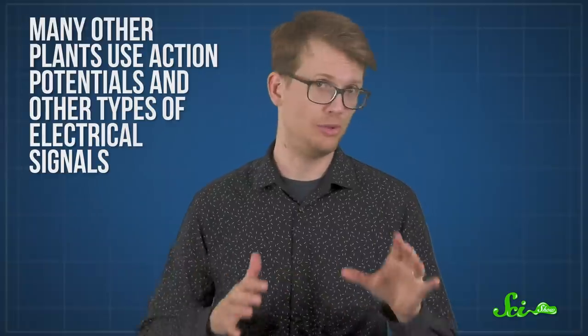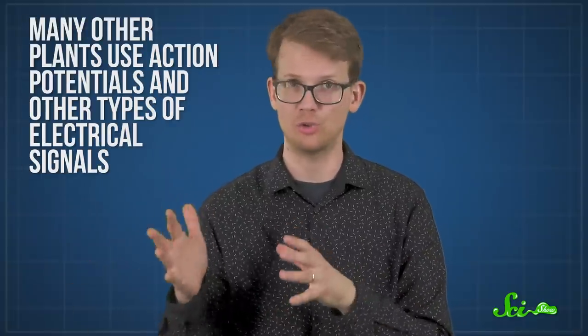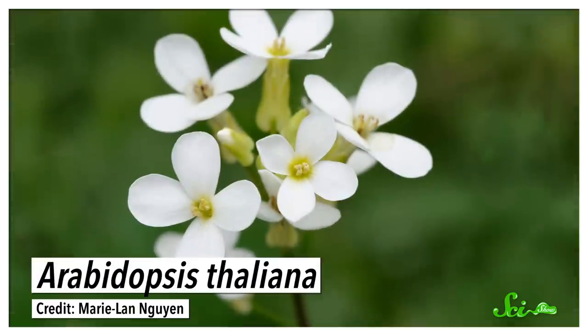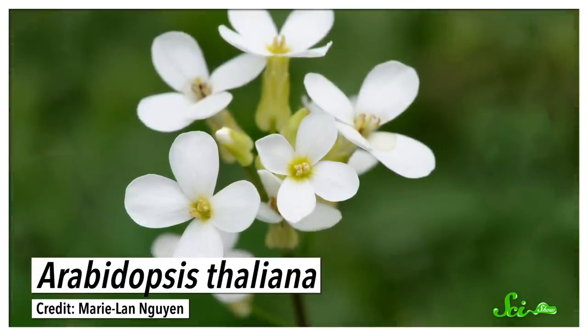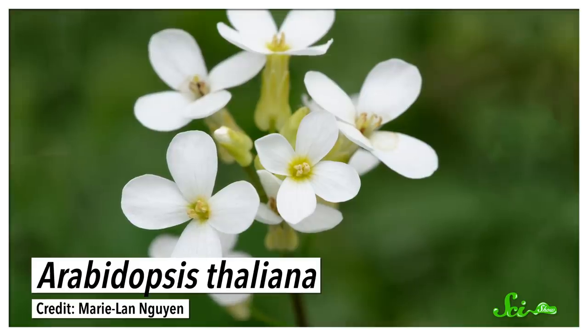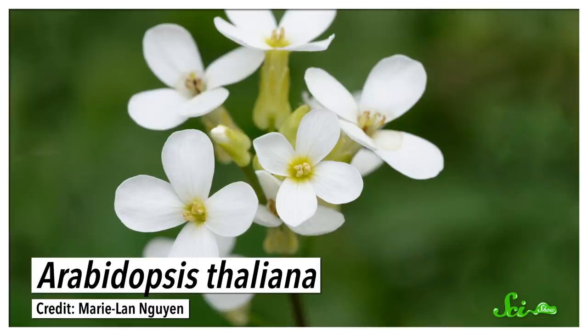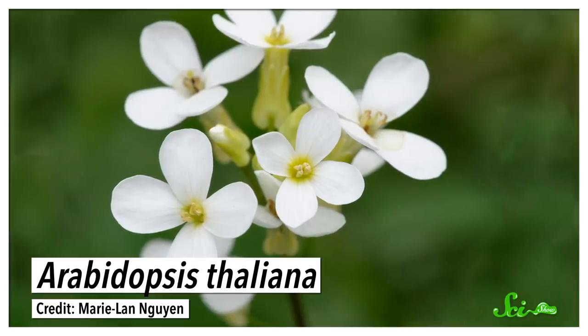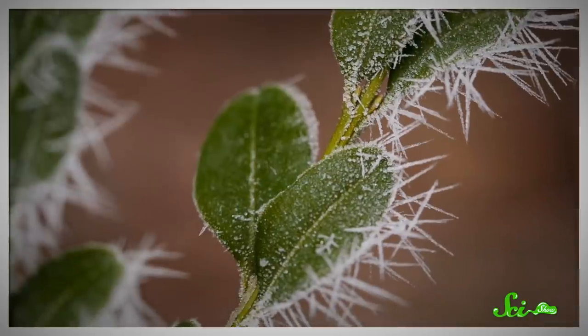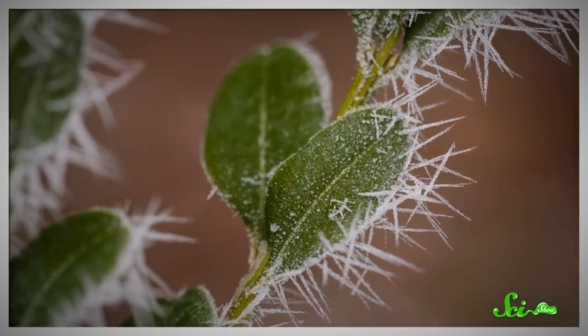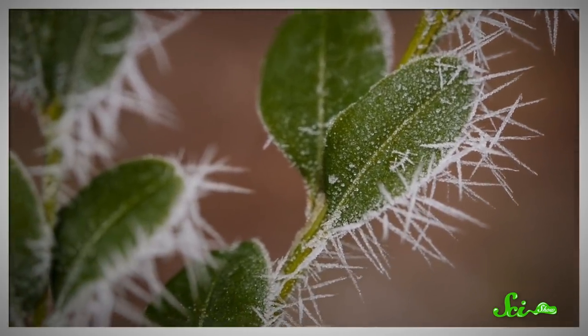And it's not just the Venus flytrap. Many other plants use action potentials and other types of electrical signals. And even without brains, plants can do things that involve some pretty impressive math. A 2013 study used mathematical models to show that a small mustard relative can do something akin to division to partition its food so it lasts through the night. Other plants have the equivalent of an internal thermostat that lets them regulate their temperature.